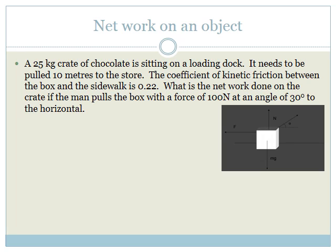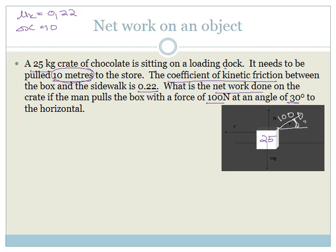Now let's do the next example. A 25-kilogram crate of chocolate is sitting on a loading dock. It needs to be pulled 10 meters to the store. The coefficient of kinetic friction between the box and the surface is 0.22. What is the net work done on the crate if a man pulls the box with a force of 100 newtons at an angle of 30 degrees? So we have: mass = 25 kg, μk = 0.22, ΔX = 10 m, applied force = 100 N at 30 degrees.